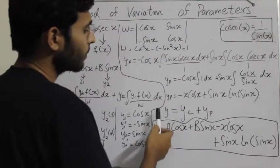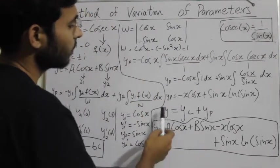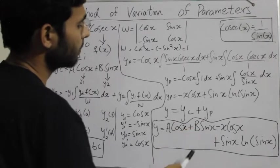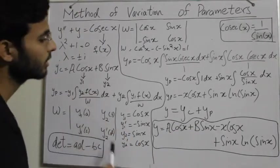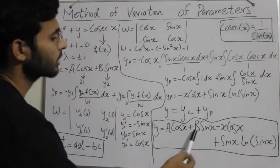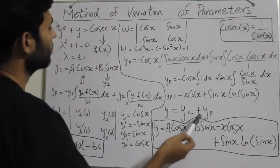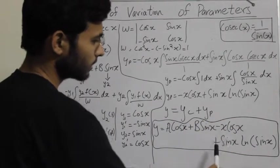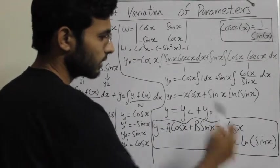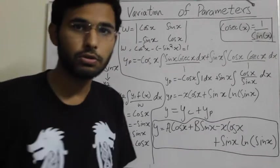So the complete solution of this differential equation is y equals yc plus yp. yc is a cos x plus b sin x, and yp is minus x cos x plus sin x ln sin x. This is how you solve a second order differential equation. Thank you for watching and goodbye.